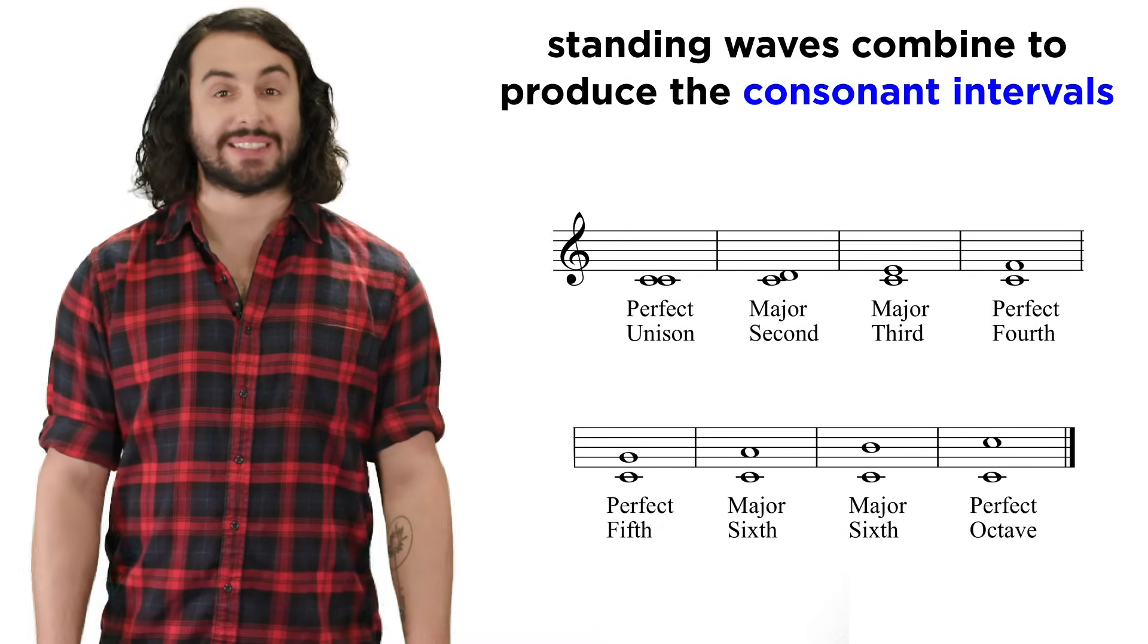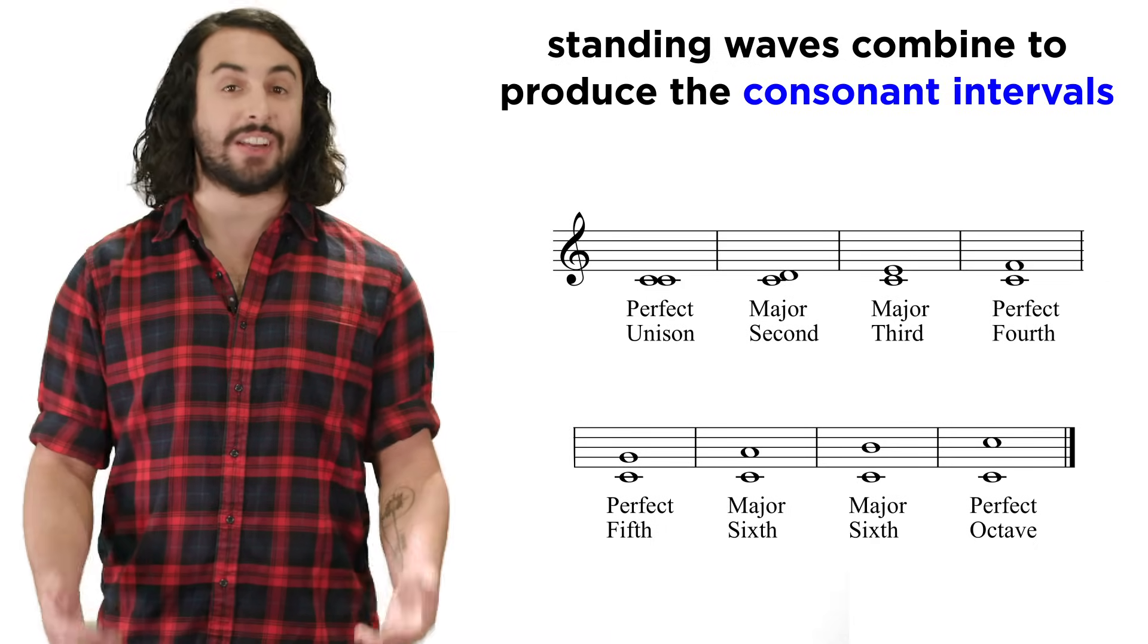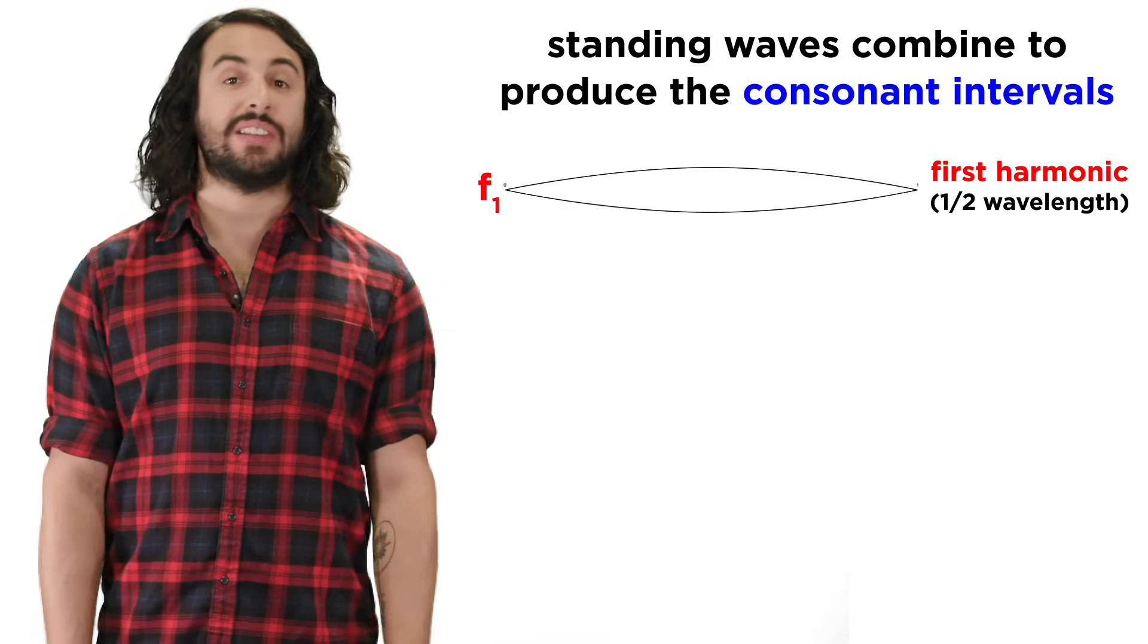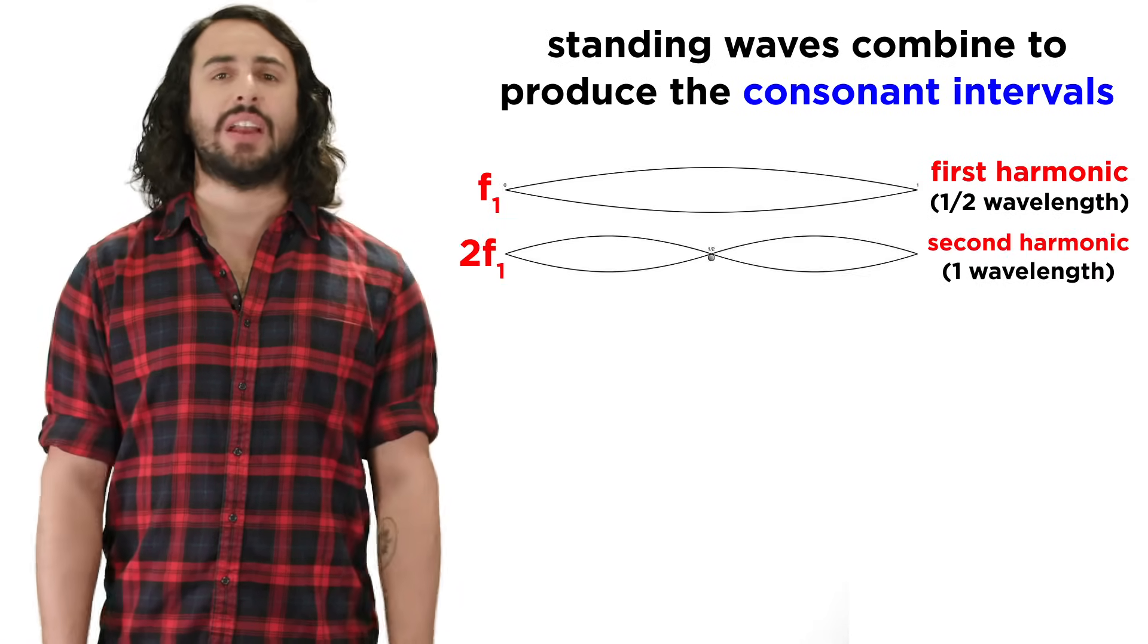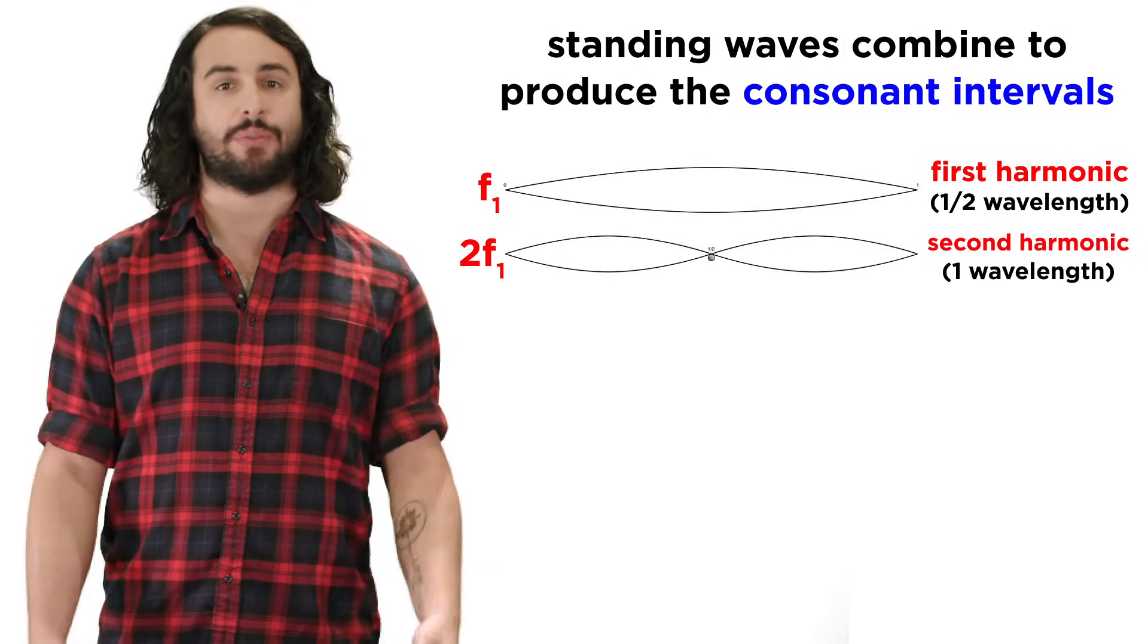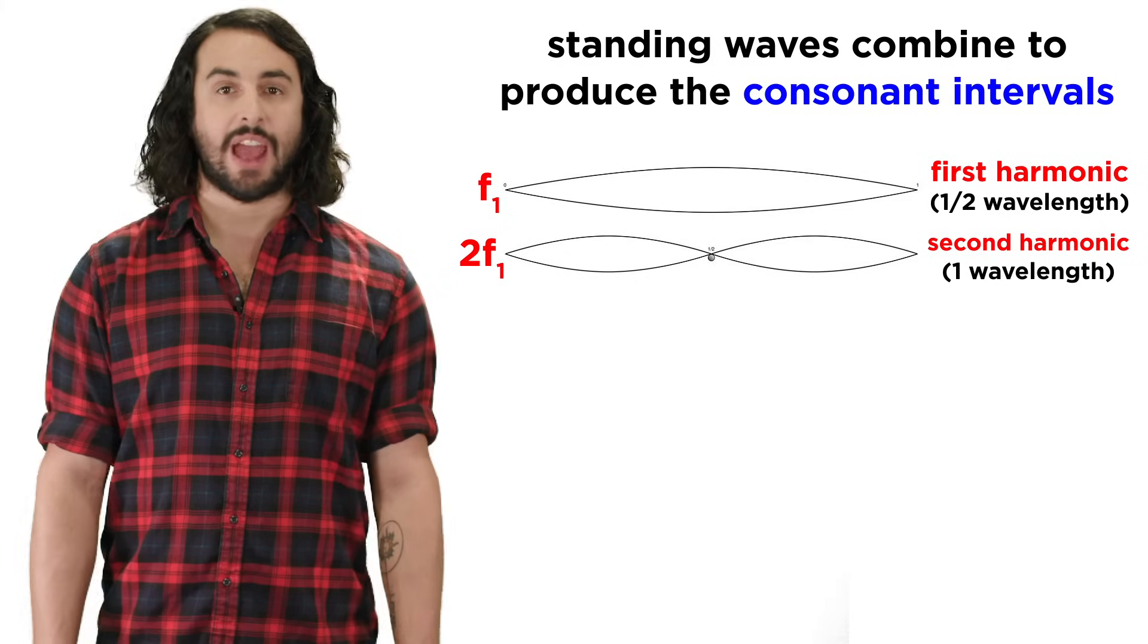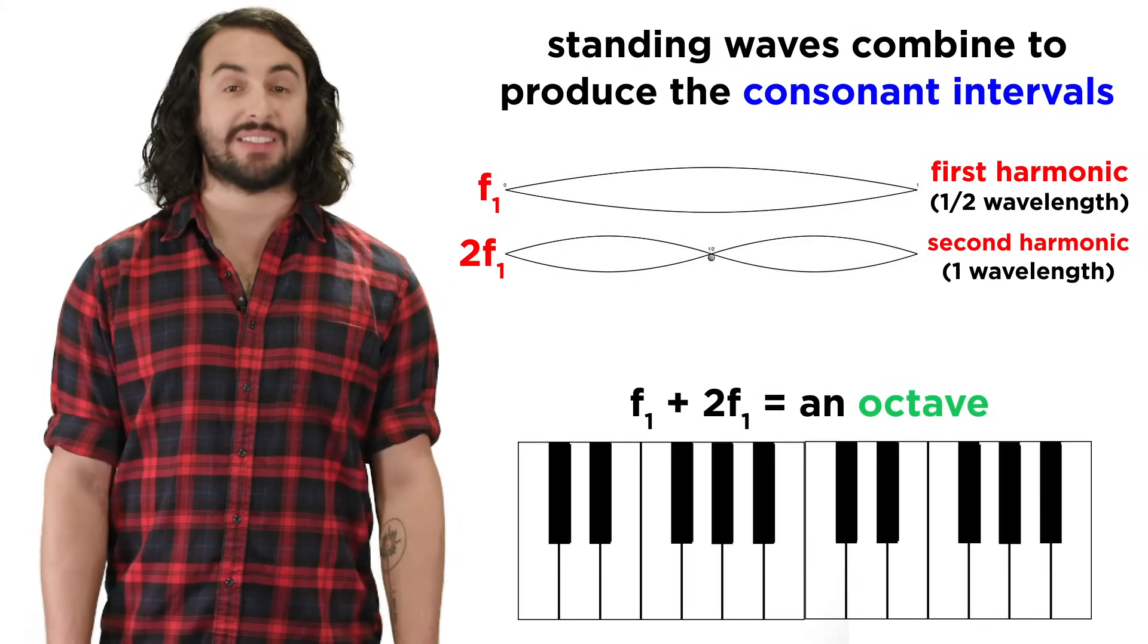One interesting thing about standing waves is that they combine to produce all of the consonant intervals in music that sound good to our ears. If we consider this half-wavelength to be the first harmonic with a frequency of F1, then doubling this frequency to 2F1 will produce a standing wave with one full wavelength, and will give us the second harmonic, which in music would be perceived as an octave.